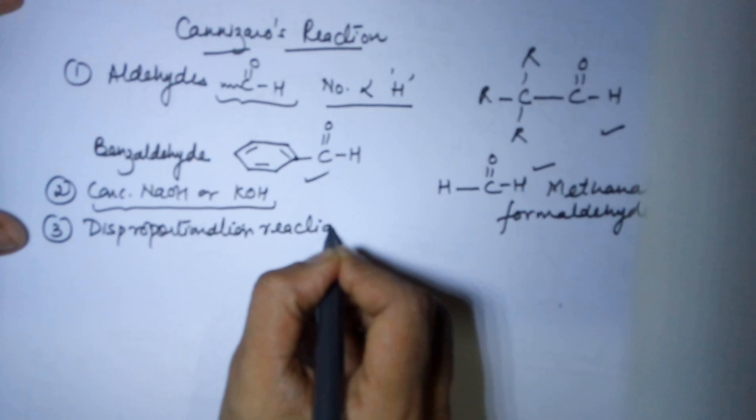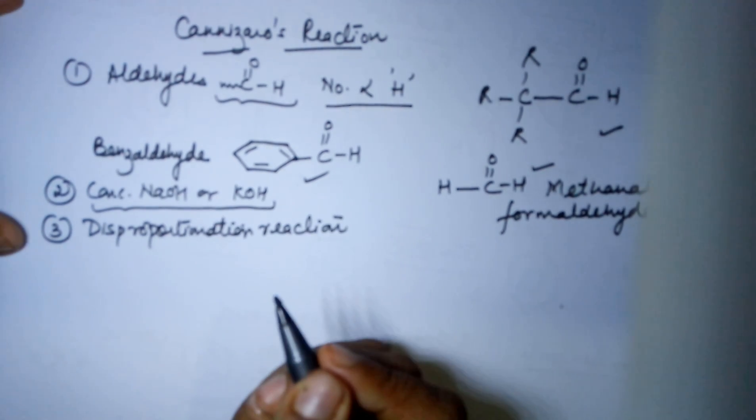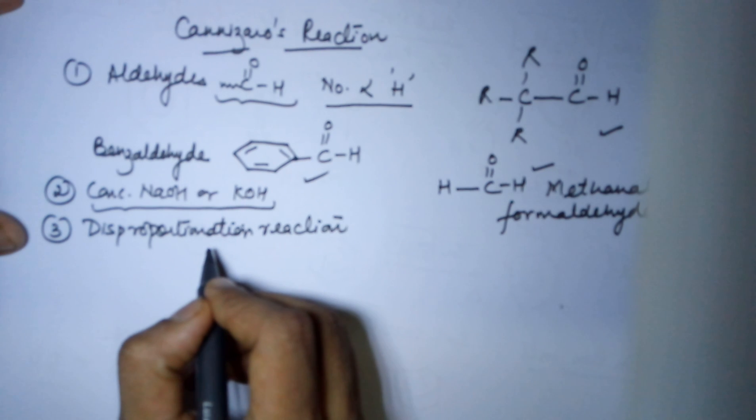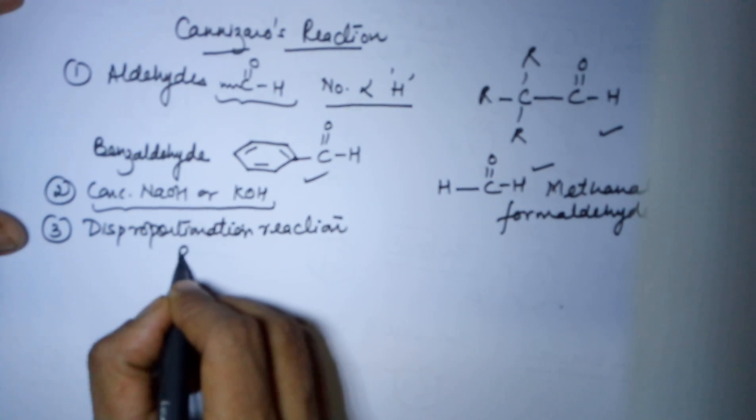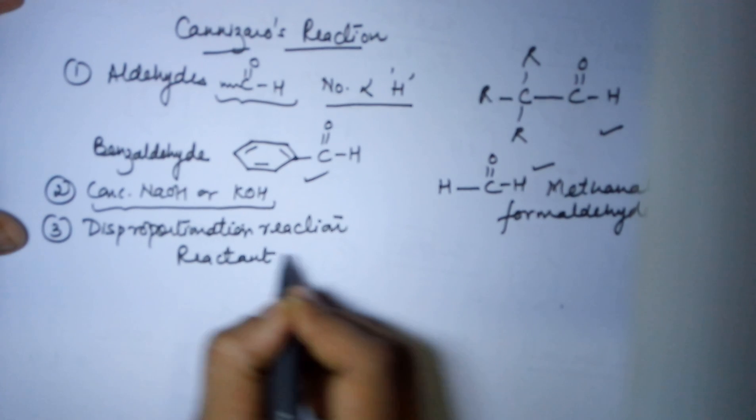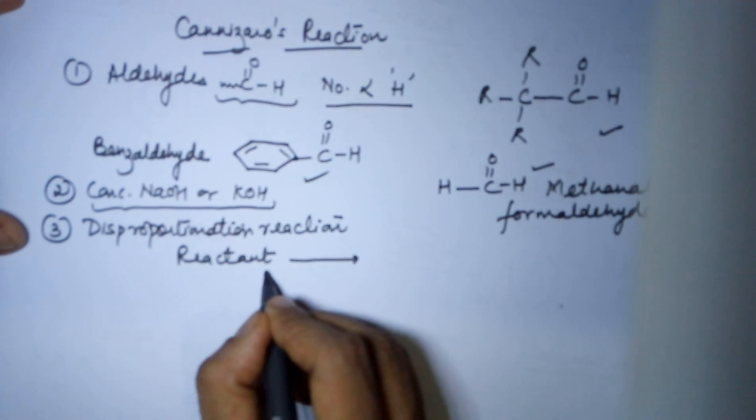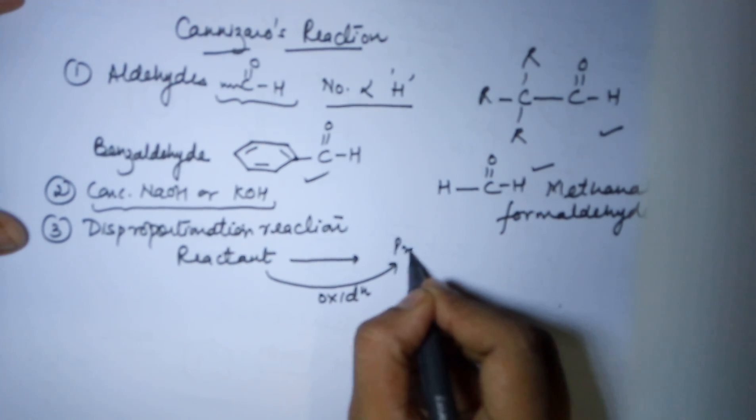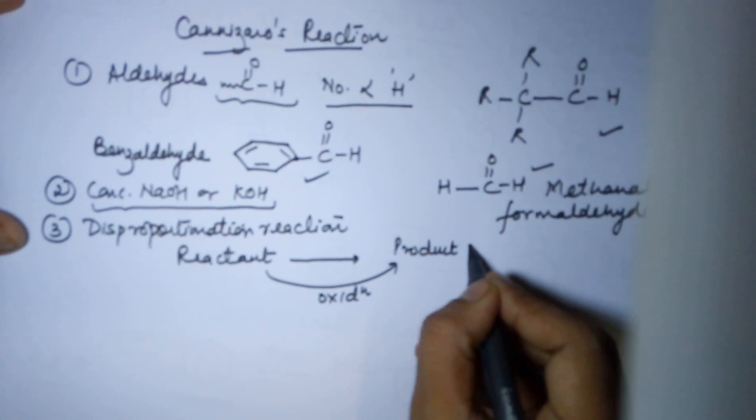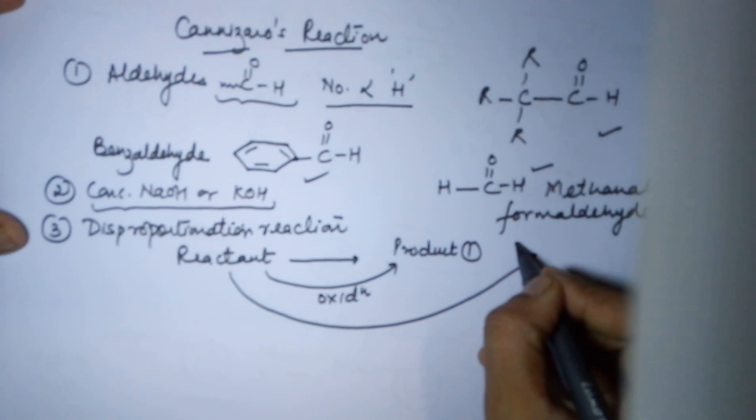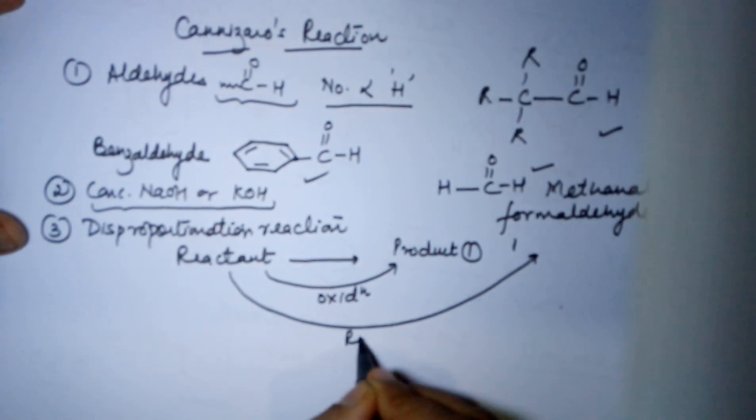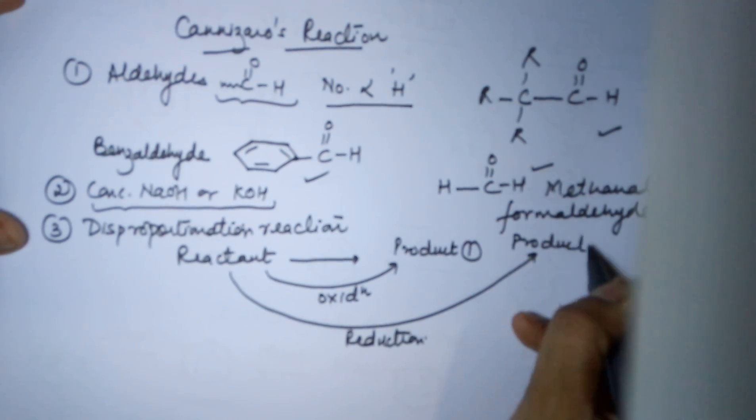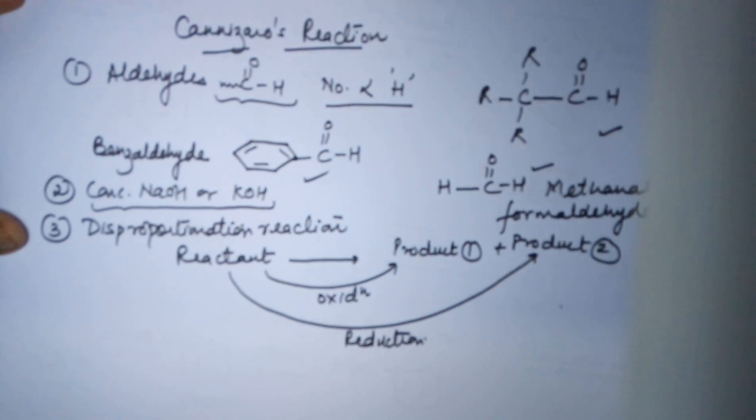Now what do you mean by a disproportionation? Disproportionation means the same reactant, you have a single reactant, and this reactant will undergo oxidation to give you product one and would also undergo reduction to give you product two.